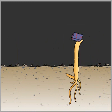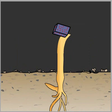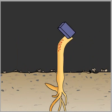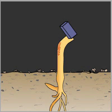When Went placed the agar block on one side of the decapitated shoot, the shoot curved away from the agar as it grew. This demonstrated that some kind of hormonal signal had diffused into the agar from the coleoptile tips, and had then diffused into the growing coleoptile. This hormone, subsequently called auxin, caused the growing plant to curve even in the absence of light. Went's experiment represented the first time that anyone had isolated a hormone from plants.